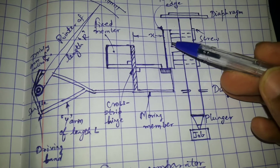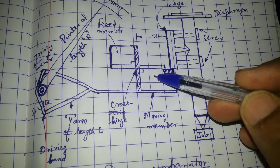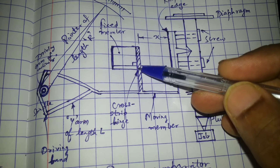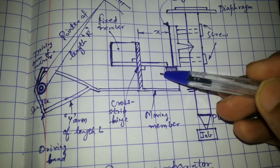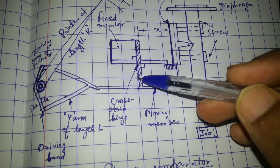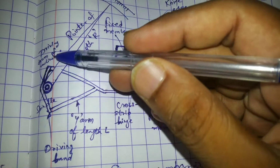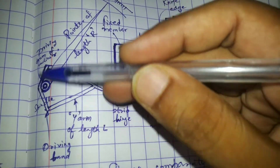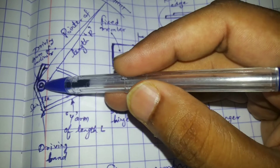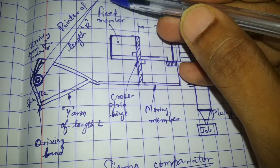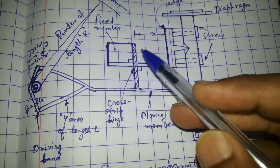Regarding the working: any vertical displacement of the plunger displaces the knife edge, which makes the moving member of the cross strip hinge pivot. The moving member of the cross strip hinge pivots; the metallic band attached to the Y arm makes the driving drum and hence the pointer rotate. Now we know X is the distance between the knife edge and the hinge pivot.